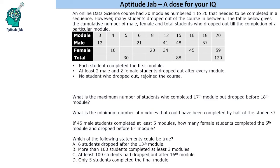Welcome to Aptitude Jab. This is a logical DI set. An online data science course had 20 modules that had to be completed in sequence. Many students dropped out in between. A table is given below showing the total number of male, female, and total students who dropped out till the completion of a particular module — this is a cumulative number.